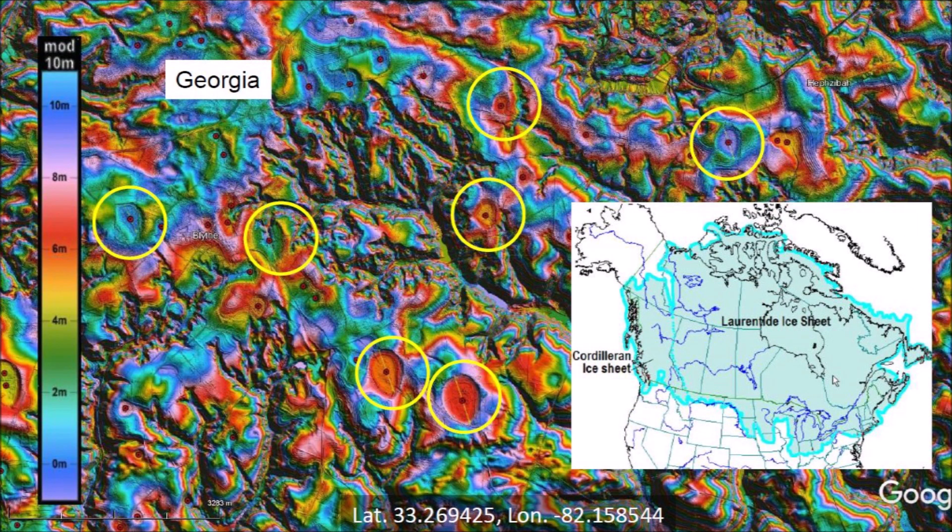Some geologists propose that the Carolina Bays are Thermokarst lakes, but this does not make sense for places like Georgia where the ground never froze even during the last glacial maximum. Another unusual characteristic of the Carolina Bays in Georgia is that many of them are on hilltops 130 meters above sea level, whereas Thermokarst lakes are usually found on low ground along fluvial channels.